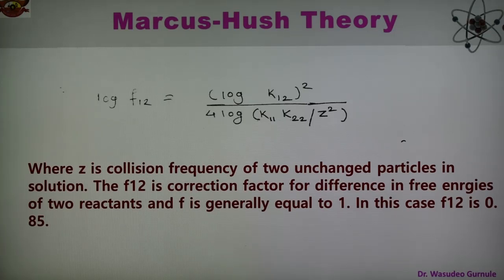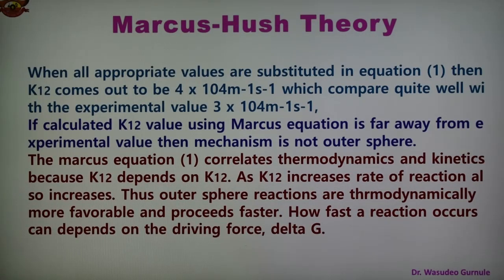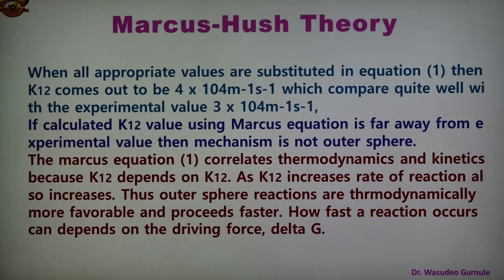When all the appropriate values are substituted in equation 1, K12 comes out to be 4×10⁴ per meter per second. This compares quite well with the experimental value of 3×10⁴ per meter per second. So the observed value is 4×10⁴ and the experimental value is 3×10⁴ per meter per second — they are quite comparable.